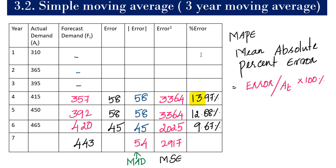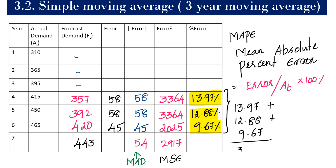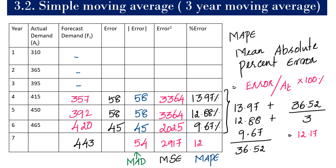We calculated the percentage error for periods 4, 5, and 6. Summing them: 13.97 plus 12.88 plus 9.67 gives 36.52. Dividing by the three periods gives 12.17%. The Mean Absolute Percentage Error is 12.17%. We have completed the calculation of simple moving average, MAD, MSE, and MAPE. If you have any questions, please leave them in the chat box. Thanks for joining — this is Karpakam signing off, good day.